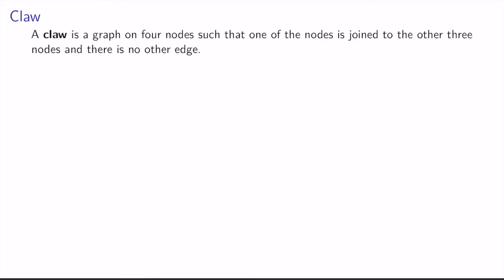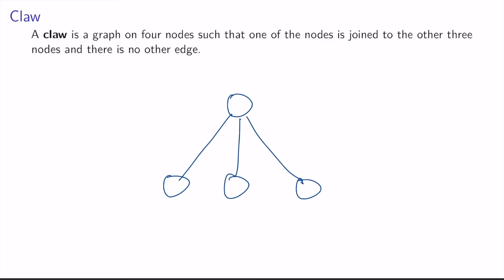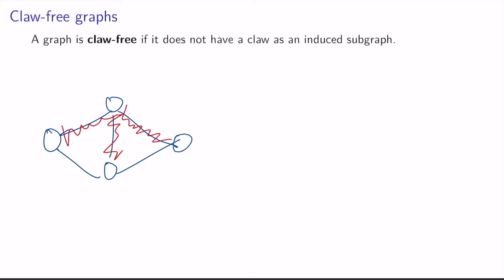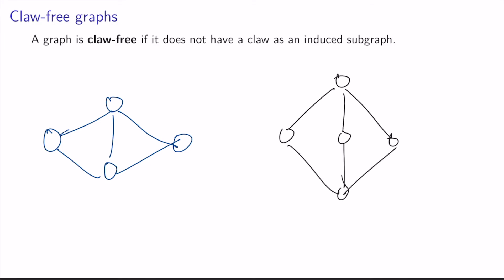A claw is a graph on four nodes such that one of the nodes is joined to the other three nodes, and there's no other edge. You can perhaps see why this is called a claw — because it looks like a claw. A graph is said to be claw-free if it does not have a claw as an induced subgraph. Consider this graph: it certainly has a claw as a subgraph, but the claw is not an induced subgraph, because taking those four nodes would require including two additional edges as well. One can easily check that this is a claw-free graph. However, this other graph is not claw-free, because it does have a claw as an induced subgraph.